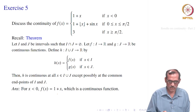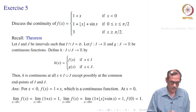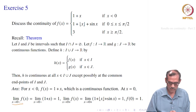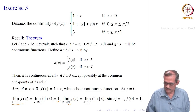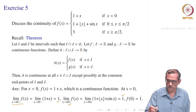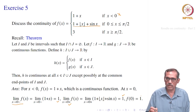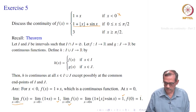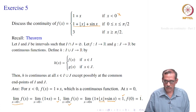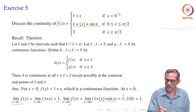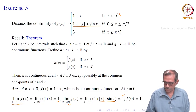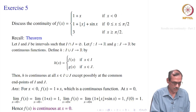For x < 0, f(x) = 1 + x is continuous. At x = 0: the left-hand limit is lim(x→0⁻) (1+x) = 1. The right-hand limit uses the second piece: lim(x→0⁺) (1 + ⌊x⌋ + sin x) = 1 + 0 + 0 = 1. And f(0) = 1 + ⌊0⌋ + sin(0) = 1. Since both one-sided limits equal the function value, f is continuous at x = 0.